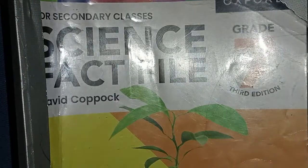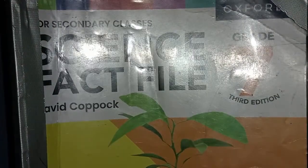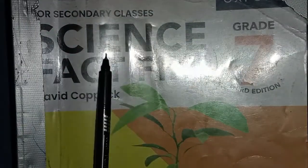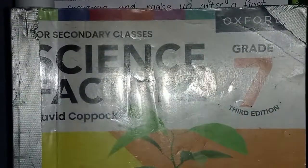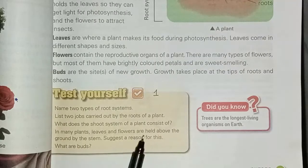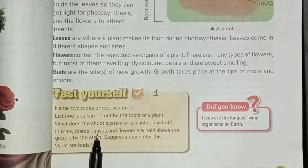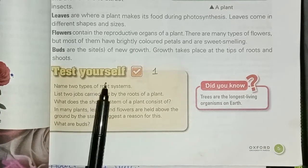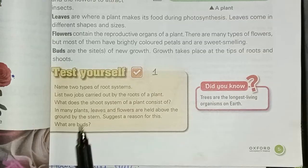Bismillahirrahmanirrahim. Assalamualaikum. You are watching YouTube channel Real Life Study. This is the book of Grade 7 for secondary classes, Science. Today we will cover Chapter number 1: Plant Systems. In the first part you will get the first 4 Test Yourself answers. Page number 5, Test Yourself questions — I will write down and share.